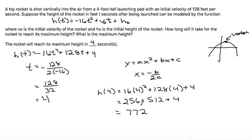So the maximum height, since the height is in a unit of feet, this would be 772 feet would be the maximum height, and that is at a time of 4 seconds, because t is in a unit of seconds.